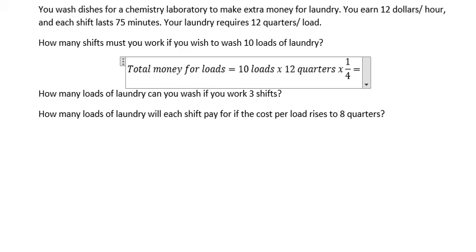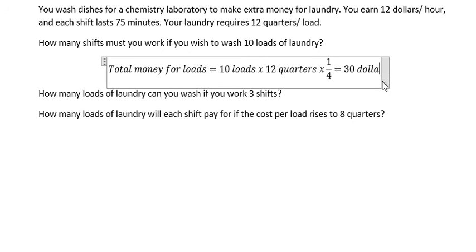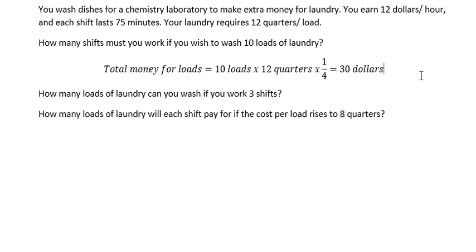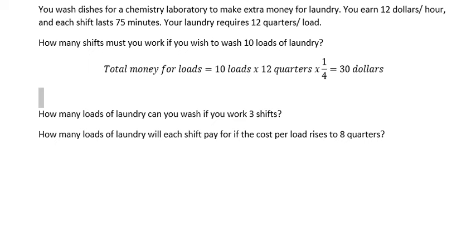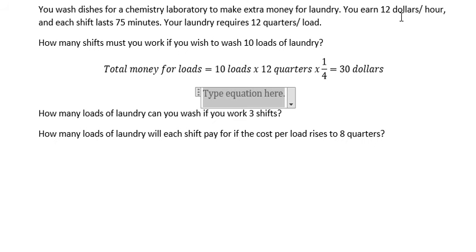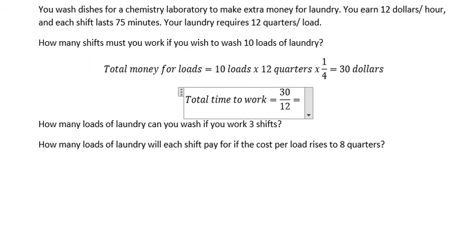The next step, we need to calculate how many hours to work to earn enough $30 in here. So we have total time to work, it's about $30 divided by $12, and you got about 2.5 hours. So this is the first step to calculate.